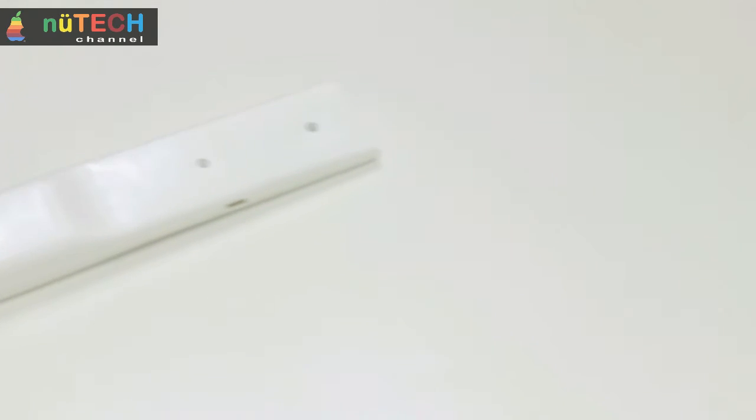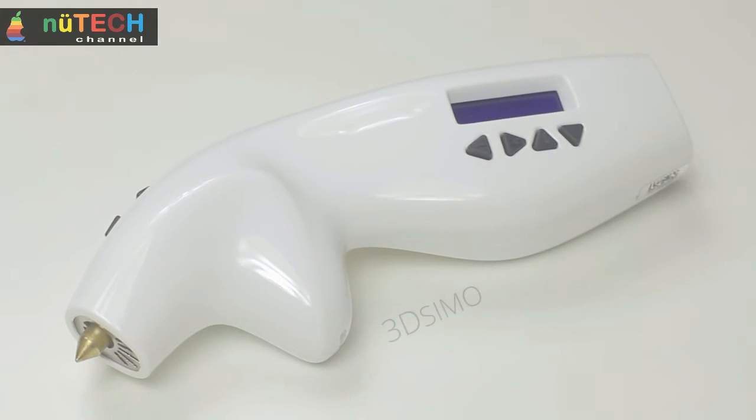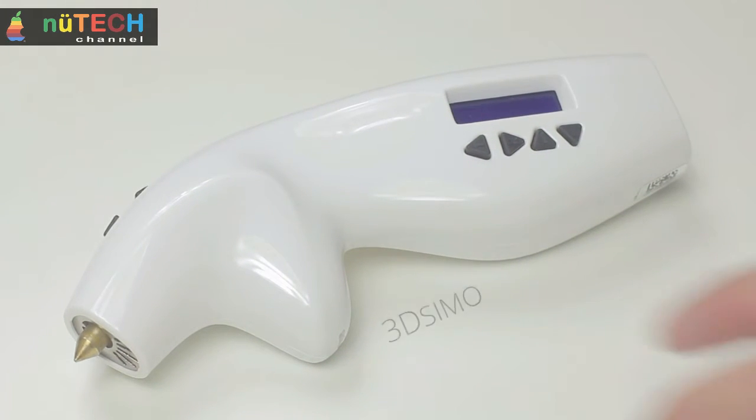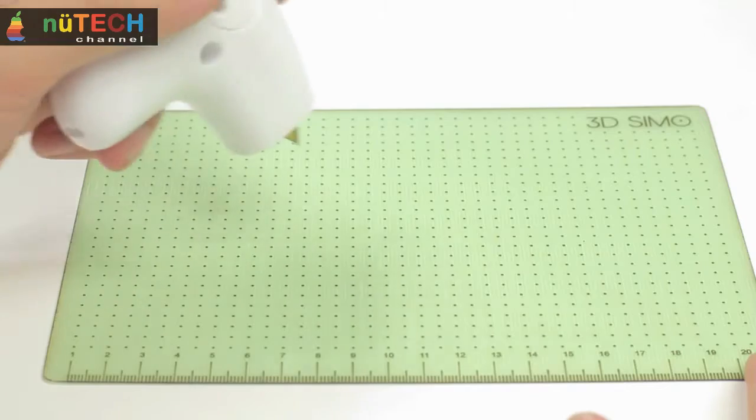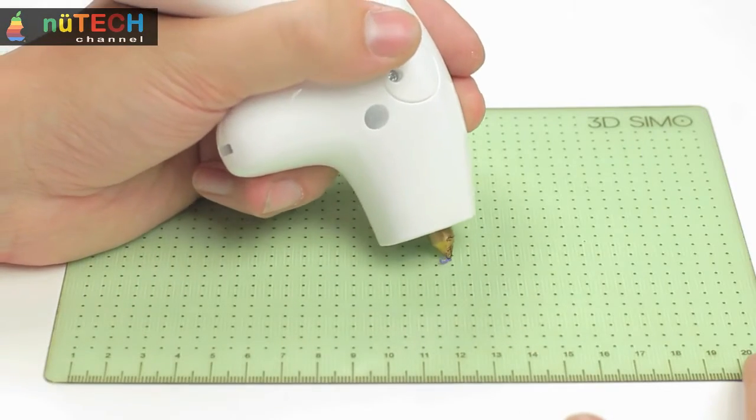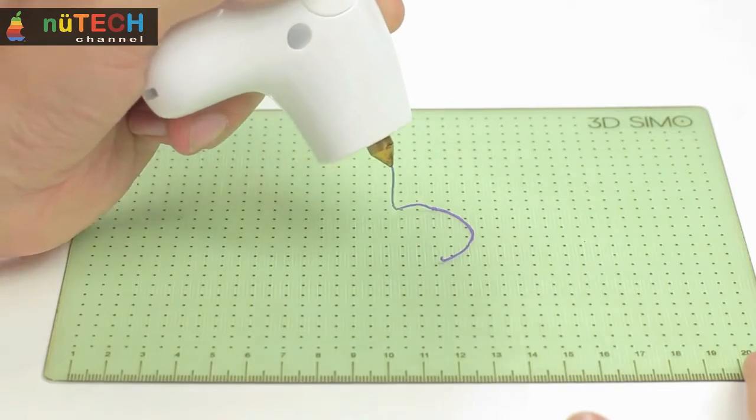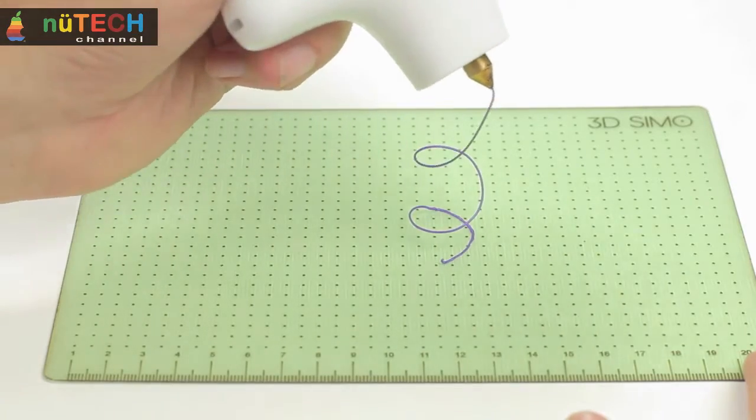It all started in 2013 with our first product, the original 3DSimo. It's the very first multi-material 3D pen in the world. You can set the speed, temperature, and also choose from the default material profiles.